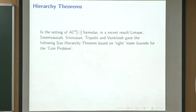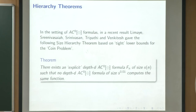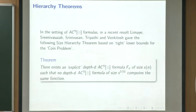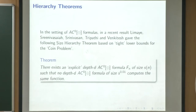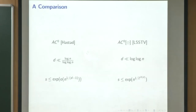In AC0 parity, a recent result that Aditya also mentioned uses tight lower bounds on the coin problem to separate AC0 depth-D circuits. It says that there are explicit AC0 formulas of certain sizes such that the same function cannot be computed by circuits of much smaller size at the same depth.